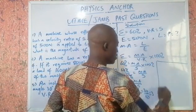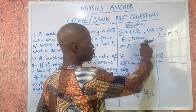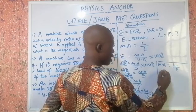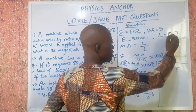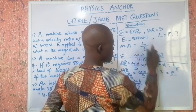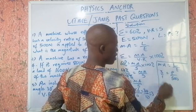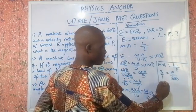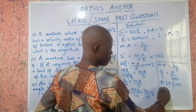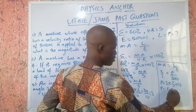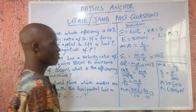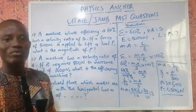Our mechanical advantage is 3. Now we can use MA with the effort to get our load: MA equals load over effort, so 3 equals P over 500. Cross-multiplying gives P equals 3 times 500, which is 1500. The load P is 1500 newtons — that's the answer.